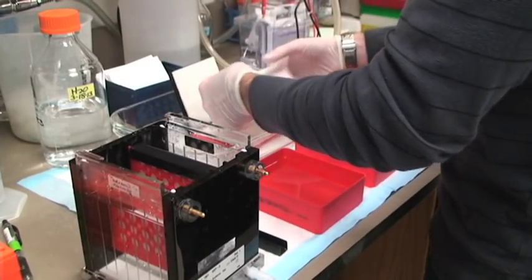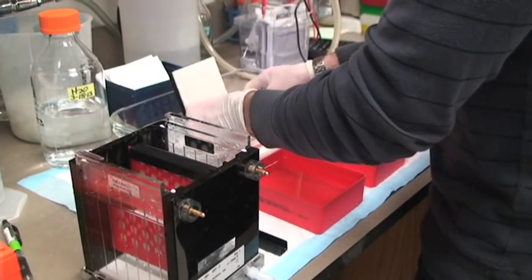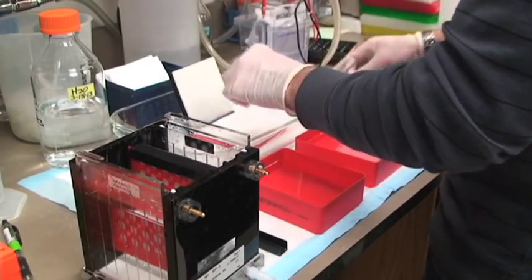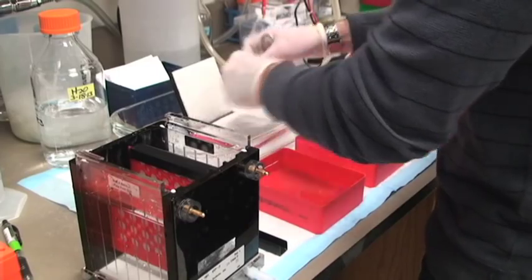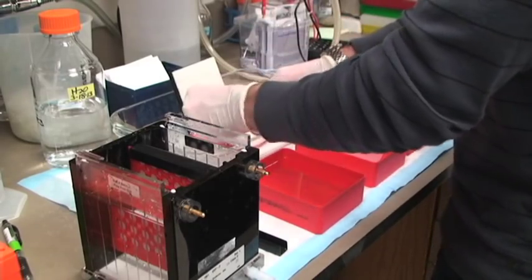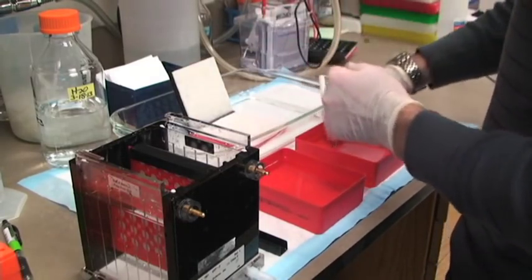You can see that Larry is using a roller to remove bubbles from the sandwich. What happens if you get bubbles in your transfer? They actually prevent the protein from going through, so it looks like there's just a blank space. And it's ugly.